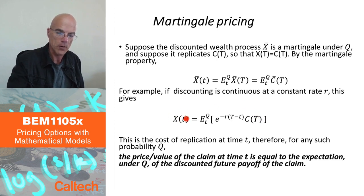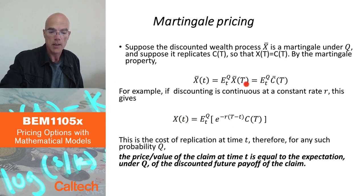This is the cost of replicating, C of T, the portfolio, which starts at small t, replicates at capital T, this is the cost. By definition, it has to be the price. The cost of replication has to be the price. So, that's it. We got this, our main formula, and this doesn't really depend on the model, depends on two assumptions.